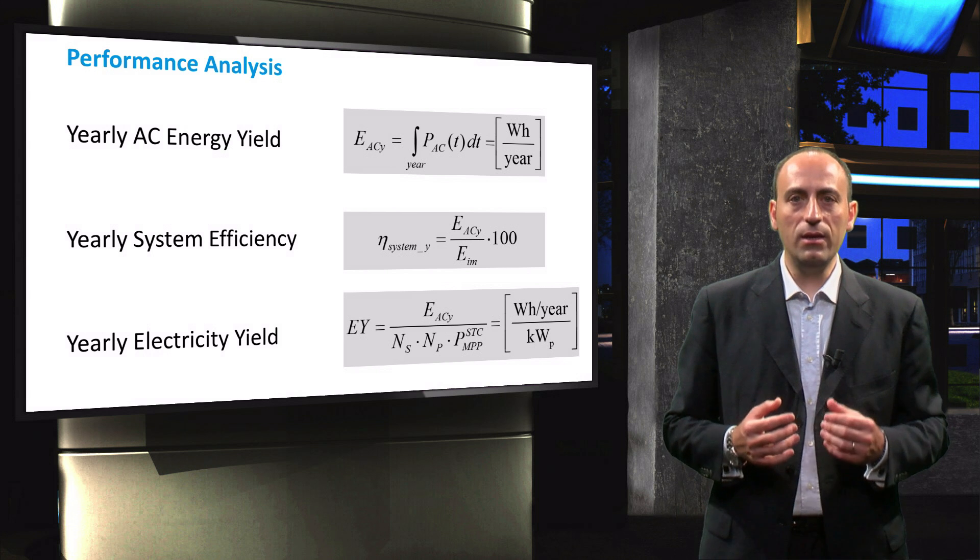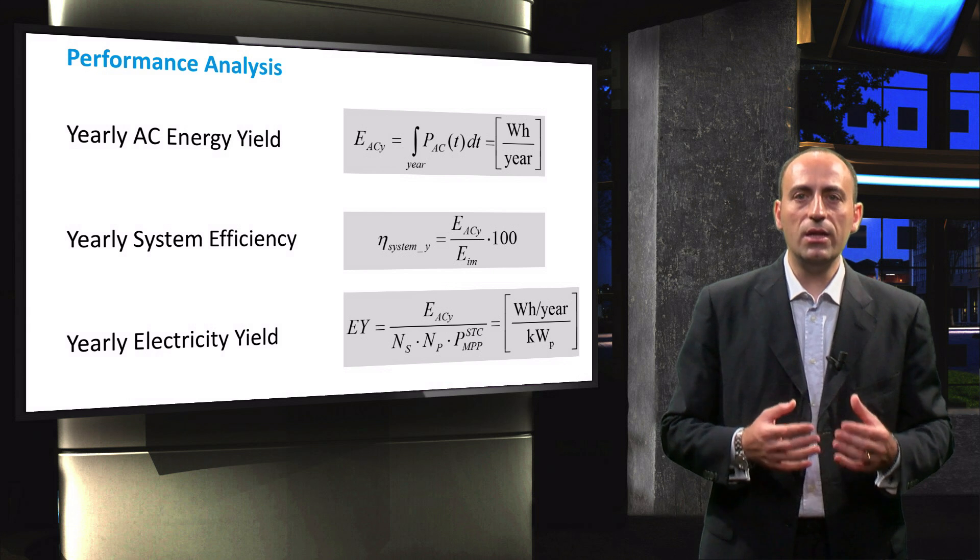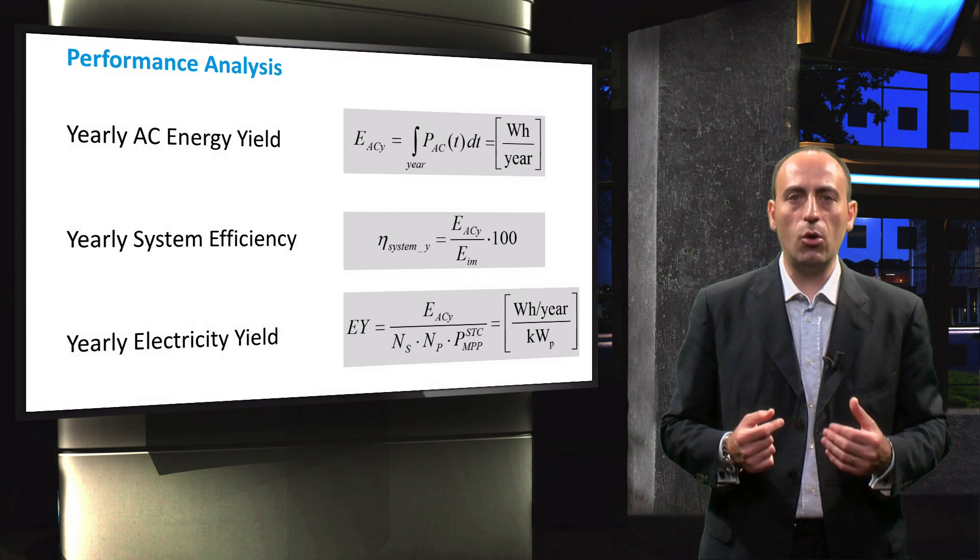The yearly yield is equal to the ratio of AC energy yield divided by the installed capacity of the PV system. It is denoted in watt-hour per year per kilowatt peak.